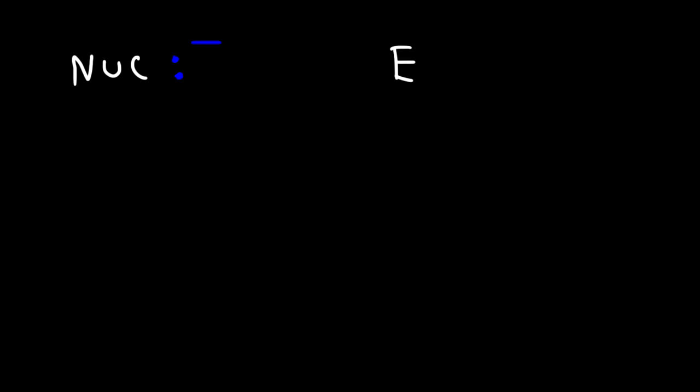So an electrophile is basically a Lewis acid and a nucleophile is basically a Lewis base. Now when dealing with reaction mechanisms between nucleophiles and electrophiles, when drawing the arrow it's always going to flow from the nucleophile to the electrophile. The arrow represents the direction of electron flow — it's going to travel from a region of negative charge to a region of positive charge.